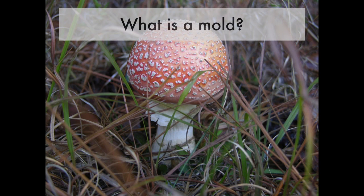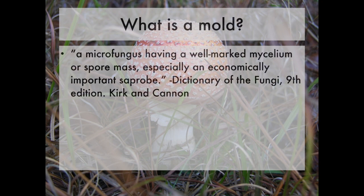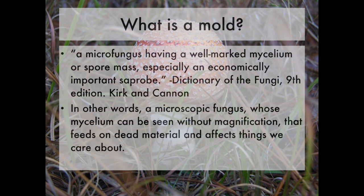I used the word mold, so it begs the question: what is a mold? It is a type of fungus, and here's a definition: a mold is a micro fungus having a well-marked mycelium or spore mass, especially an economically important saprobe. That definition comes from — believe it or not — there is a dictionary of the fungi. In other words, a mold is a microscopic fungus that we can see without magnification; we can see spots of mold on things that feed on dead material, affecting our fruits, vegetables, bread, shower curtains, and things like that.